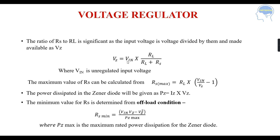Vz equals Vin, the unregulated input voltage, multiplied by RL divided by (RL + RS), where Vin is the unregulated input voltage. The maximum value of RS can be calculated using the formula: RS maximum equals RL times (Vin divided by Vz) minus 1.